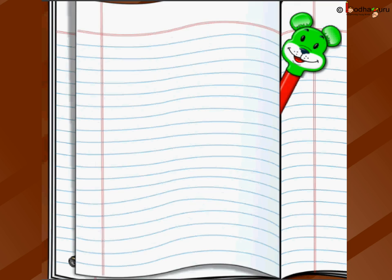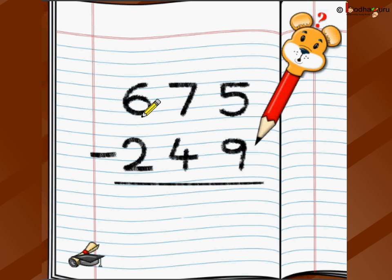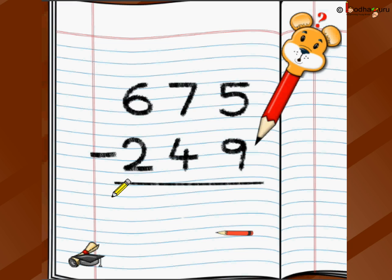Let's take another problem: you have 675 and you'd like to subtract 249. Write 675 minus 249, making sure ones aligns with ones, tens with tens, and hundreds with hundreds. Write the underline.